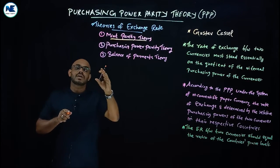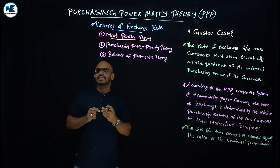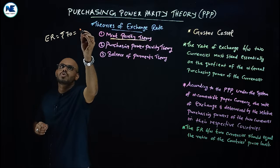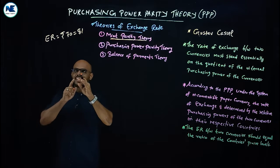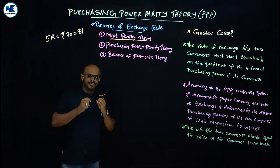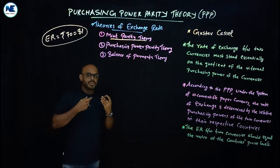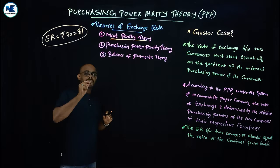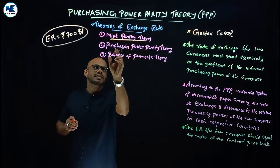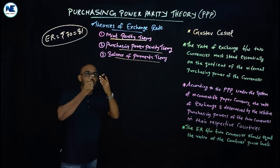Exchange rate is the rate at which you can convert one currency into another currency, or simply the price of one currency in terms of a foreign currency. For example, Rupees 70 equals Dollar one — that is the exchange rate. There are several theories explaining exchange rate determination: Mint Parity theory, Purchasing Power Parity theory, and Balance of Payments theory.